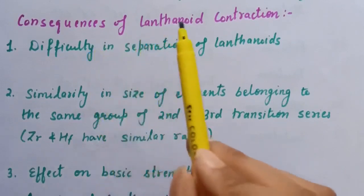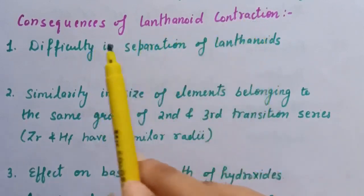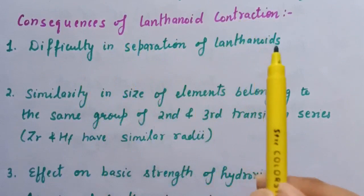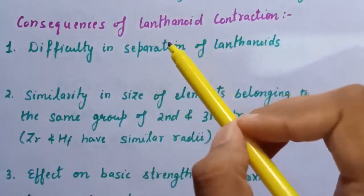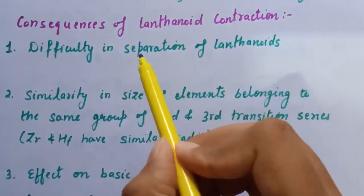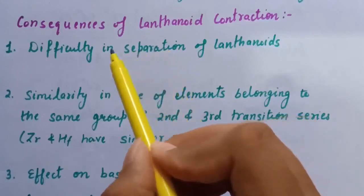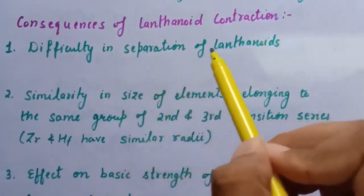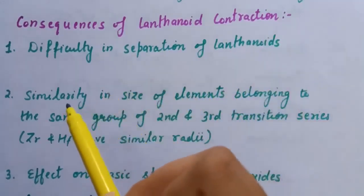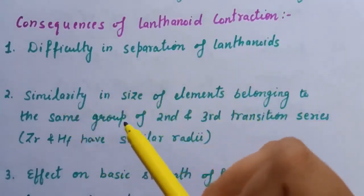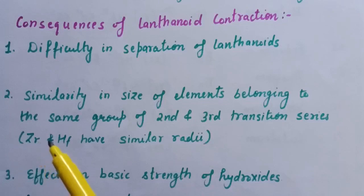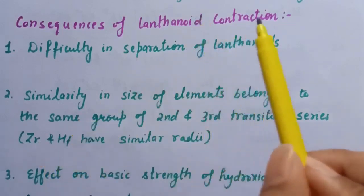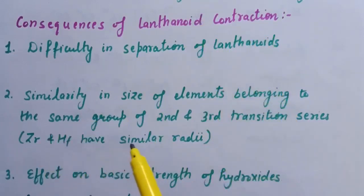The consequences of lanthanoid contraction: first is difficulty in the separation of lanthanoids. Due to lanthanoid contraction, there is only a small difference in the ionic sizes of lanthanoids, and therefore there is difficulty in their separation. Second is similarity in size of elements belonging to the same group of the 2nd and 3rd transition series. For example, zirconium, which belongs to the 2nd transition series, and hafnium, that belongs to the 3rd transition series, both have similar size because of lanthanoid contraction.